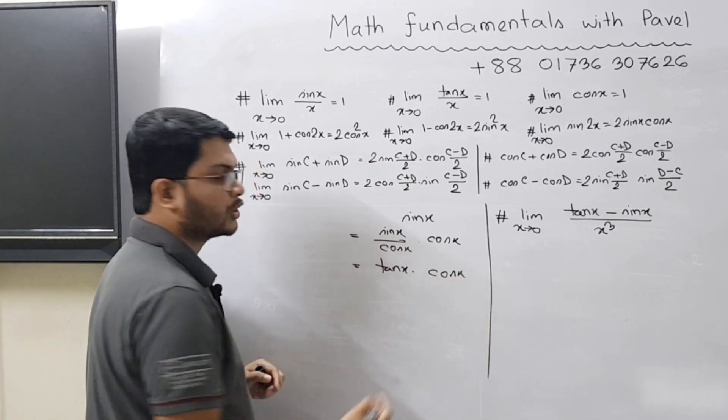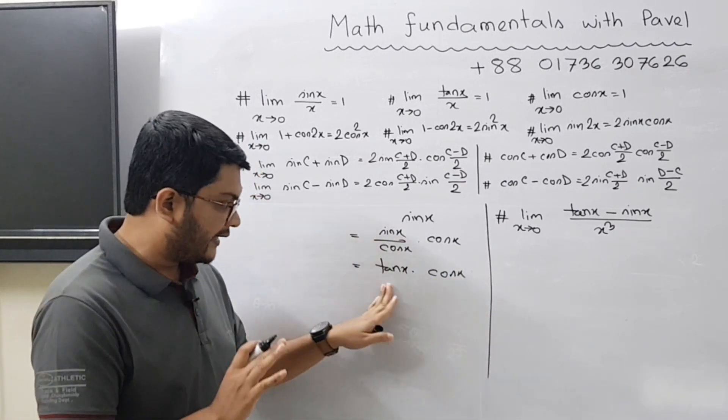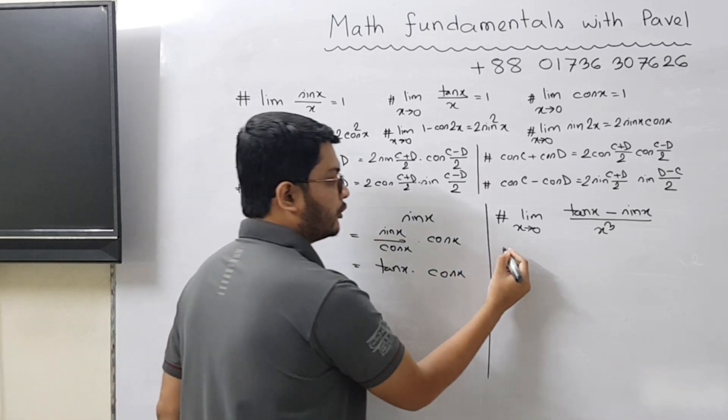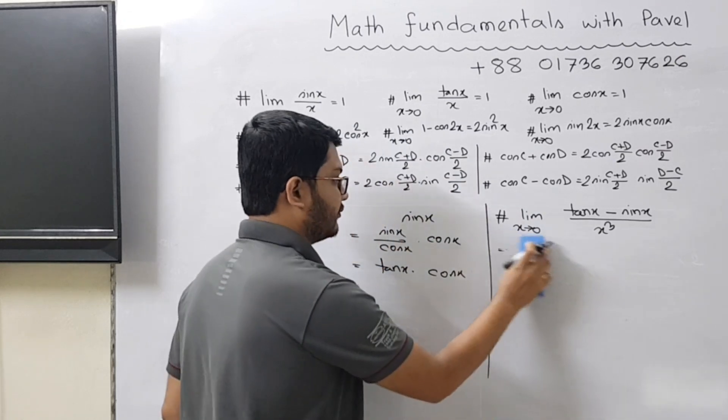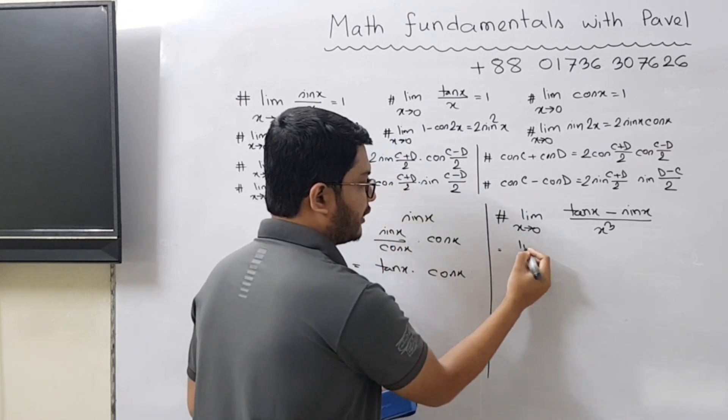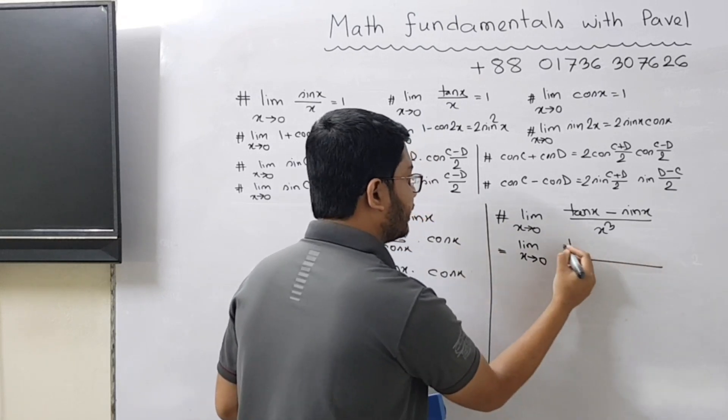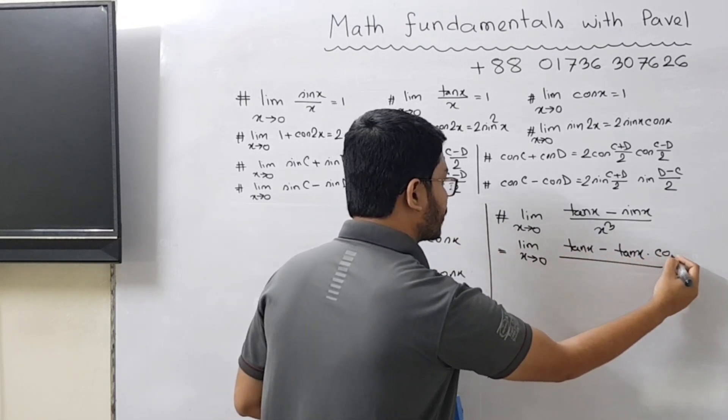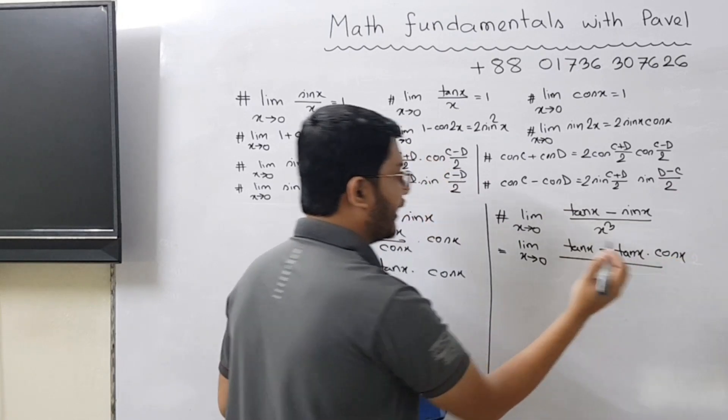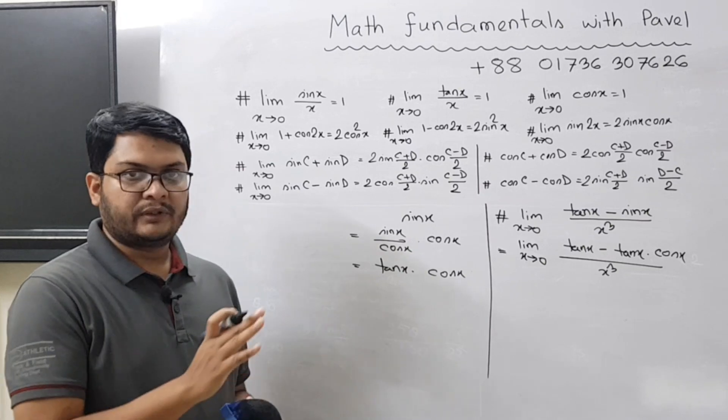So we can write limit x tends to 0, tan x minus tan x times cos x, divided by x³. This is the first thing we do. Why do we do that? Because we can take common tan x from both the pairs, or we can divide both the terms with tan x.